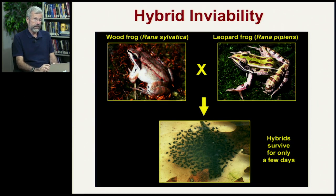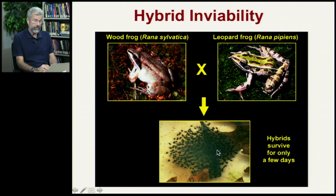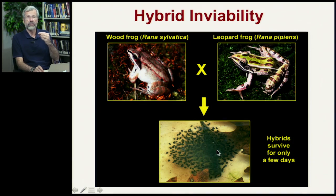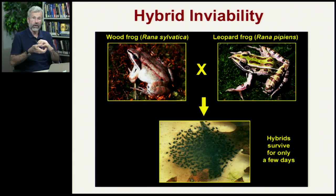First, with hybrid inviability, we have wood frogs and leopard frogs. If you get them to mate with each other — sperm from one, eggs from the other — they produce hybrid offspring, but the fertilized egg goes through the first mitosis, second mitosis, the eight- and sixteen-cell phase, and then it just stops. The genetics is all wrong, and growth stops after just a few cell divisions.